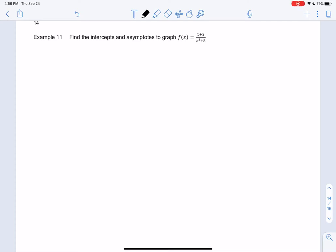Alright, let's do example 11. So we're going to find the intercepts and asymptotes. So first let's factor and see if anything cancels out.